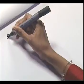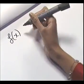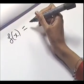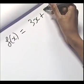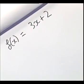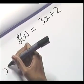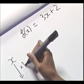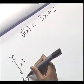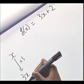Let's work out another inverse function. This time we'll have f of x equals 3x plus 2. Now what does f of x do? We start with x, we multiply it by 3 to get 3x, and then we add on 2.